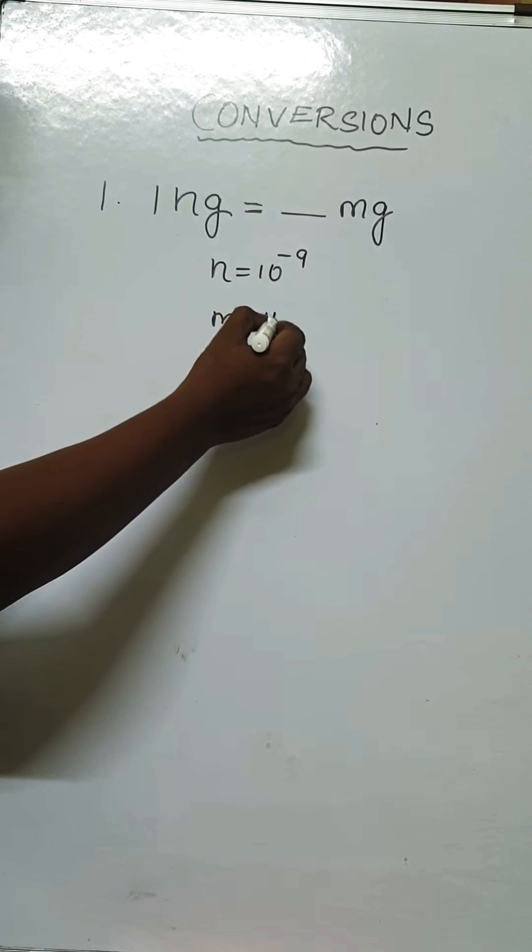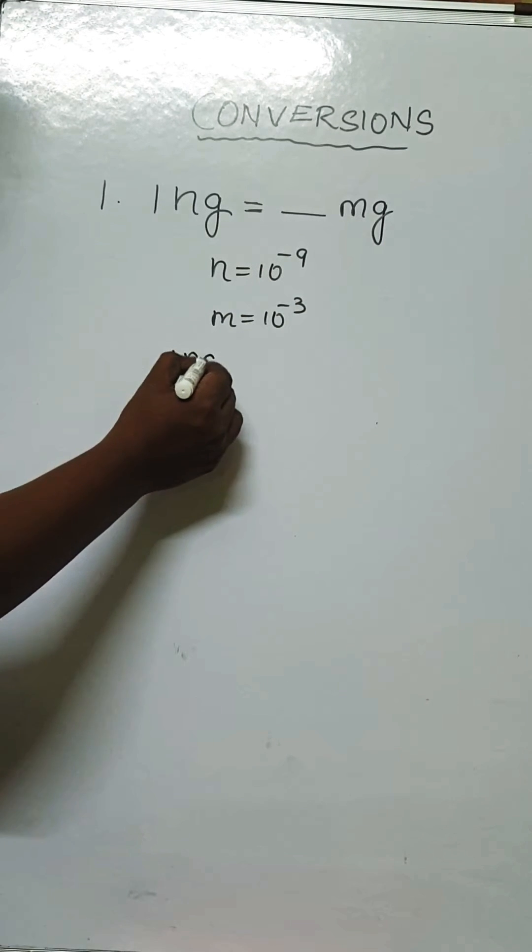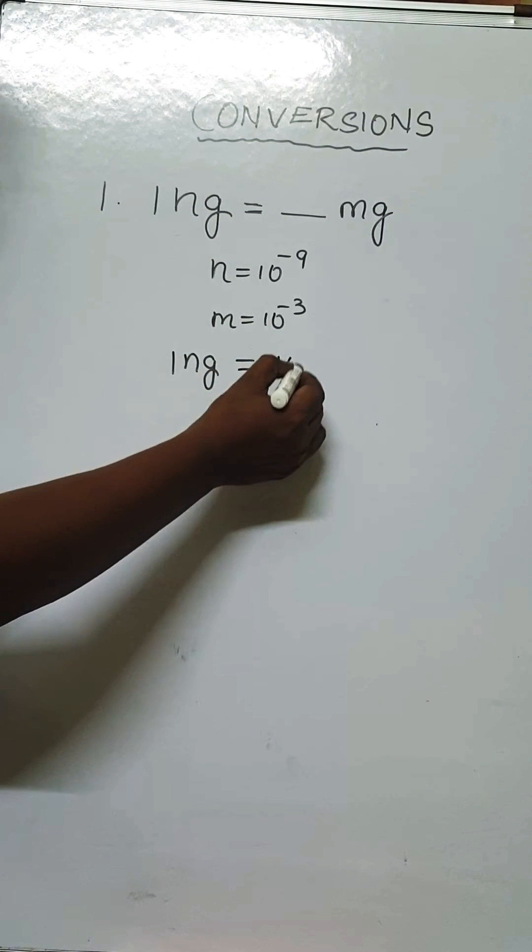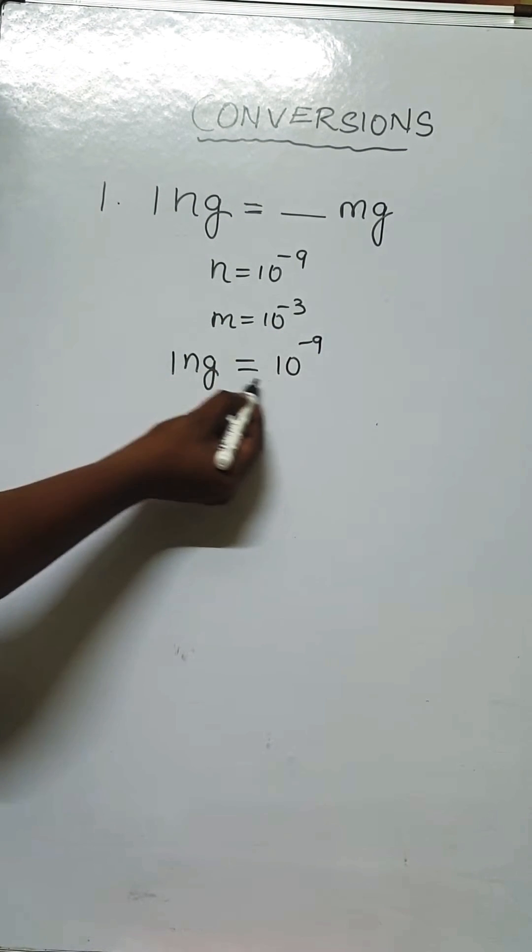So first, let us write the question. One nanogram is equal to... In the place of nano, I am writing 10 power minus 9. In the place of nano, I wrote 10 power minus 9 grams.